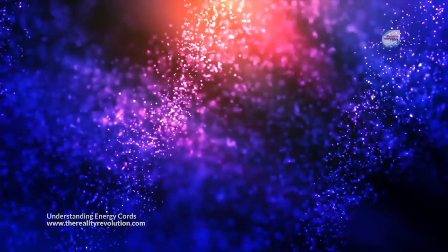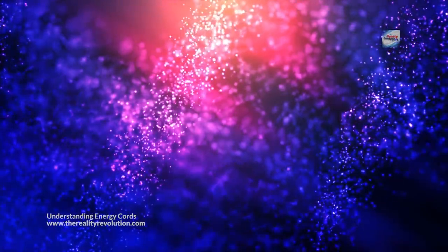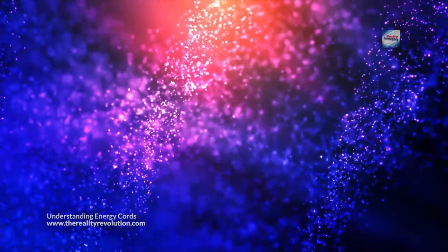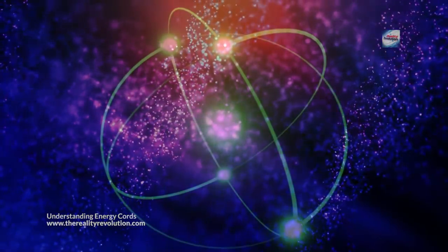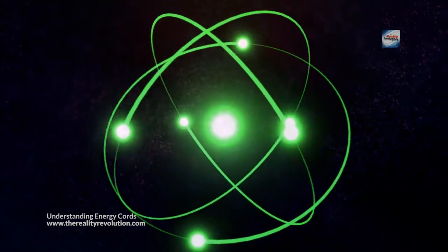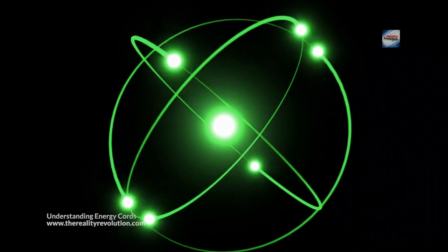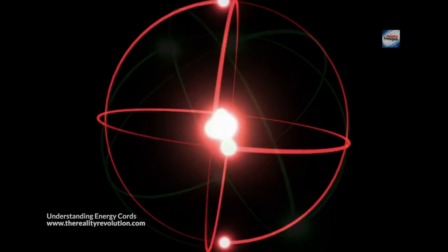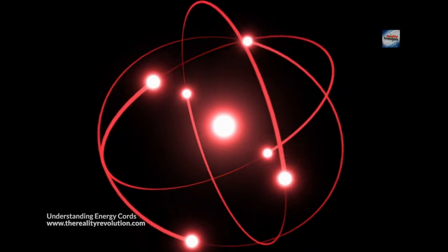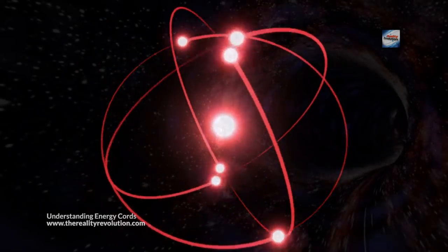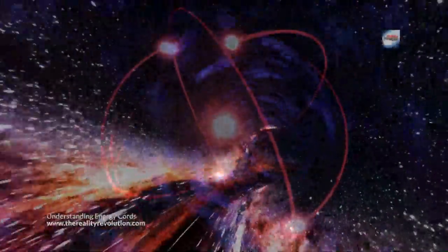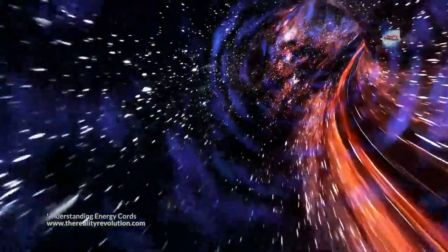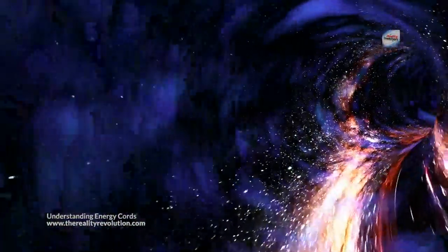When two people interact with each other, energy cords are formed between them. These energy cords can feel either energizing or depleting. Sometimes you can lose energy through a cord. It can also be a way for a person to gain information from you or even in a dark way manipulate and control you. Most individuals are not consciously aware of these energy cords but they can feel them on a subconscious level.